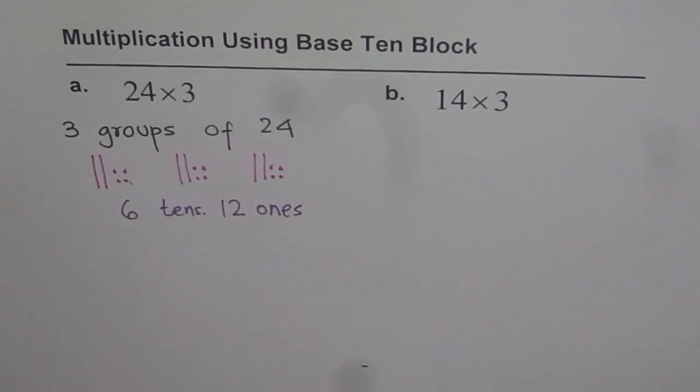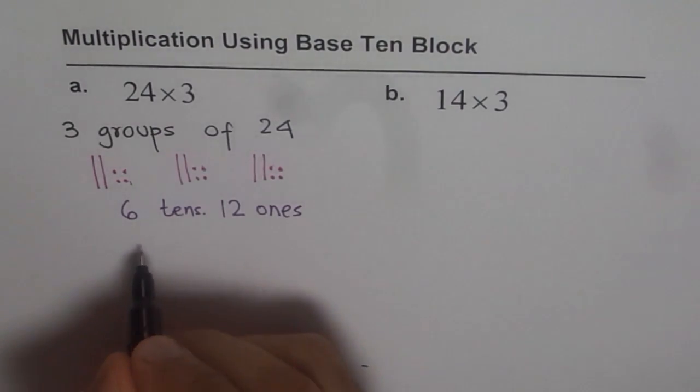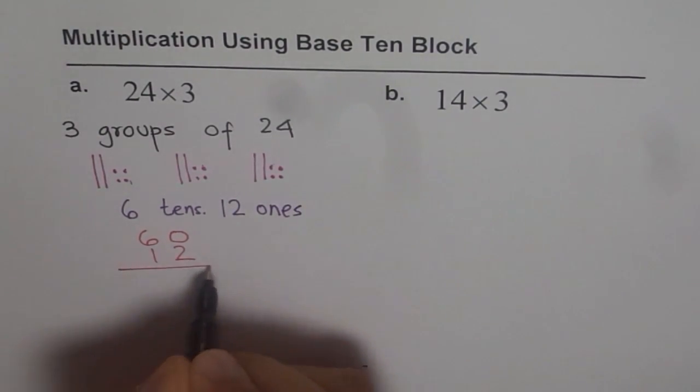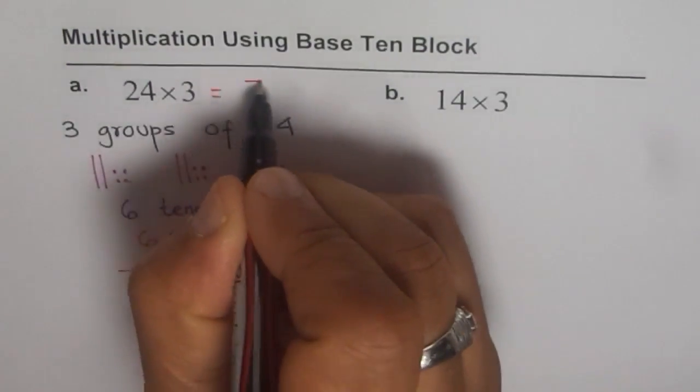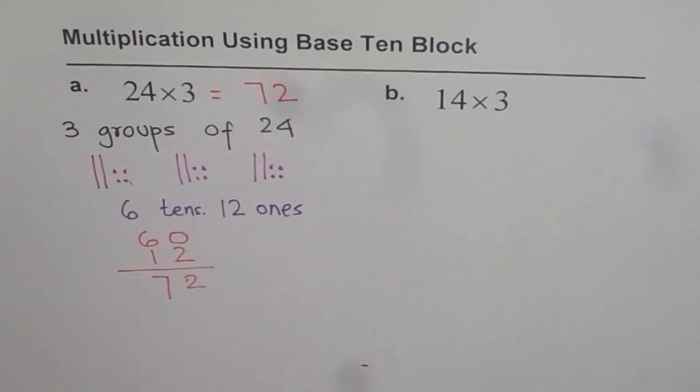So, 6 tens and 12 ones, what number is it? Let's write and figure it out. 6 tens means 60, right? 12 ones means 12. Let's add them and get 2 and 6 plus 1 is 7. So, the answer is 72.